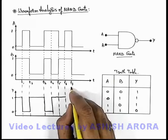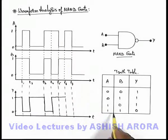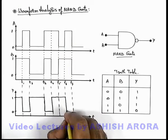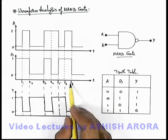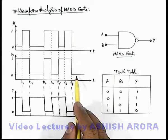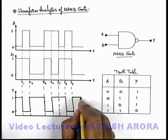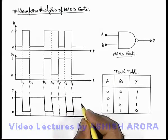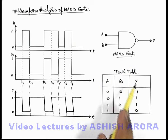From t6 to t7, both inputs are high, so correspondingly the output should be equal to 0. From t7 onward, both inputs are in state 0, so the output will again be high and continue to remain high. This is the output signal we are getting at terminal Y, drawn corresponding to the truth table of the NAND gate.